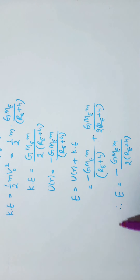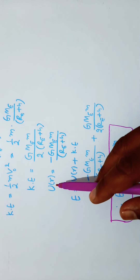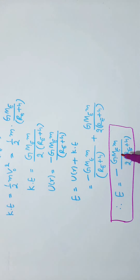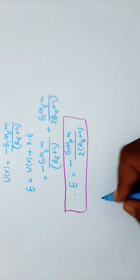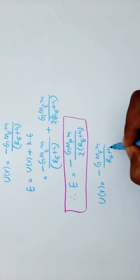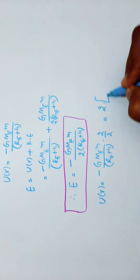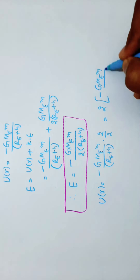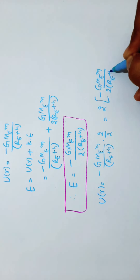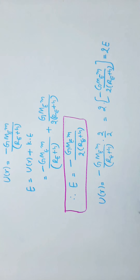The potential energy is negative and the total energy is also negative. We can write potential energy as minus GME m divided by (RE plus H). Multiplying and dividing by 2, we get 2 times minus GME small m divided by 2(RE plus H), which equals 2 times total energy. So potential energy equals 2 times total energy.